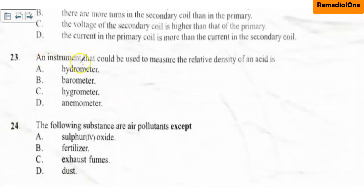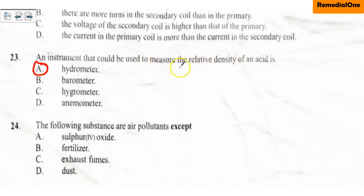Question twenty-three: an instrument that could be used to measure the relative density of an acid is A. hydrometer, B. barometer, C. hydrometer, D. anemometer. The correct option is A — a hydrometer. That is what we use to measure the relative density of an acid. For example, in a car battery, the electrolyte is tetraoxosulfate(VI) acid, and we use this hydrometer to check the density and concentration of the acid to know whether it needs to be topped up.